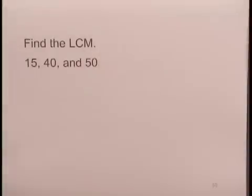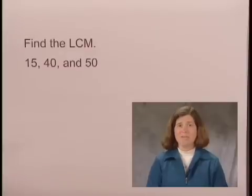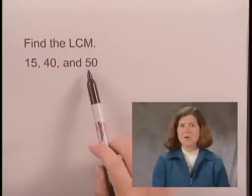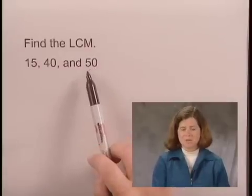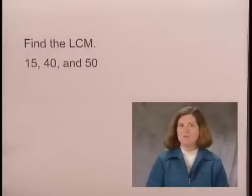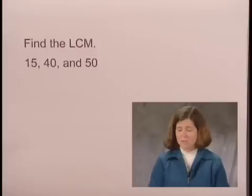We'll find the least common multiple, or LCM, of three numbers: 15, 40, and 50. The first thing to check before starting a procedure to find the least common multiple is the largest number, 50. Is it a multiple of the other two numbers, 15 and 40? It is not. If it is, then you don't have to do any more work. But in this case, it's not, so we need to go through a procedure.